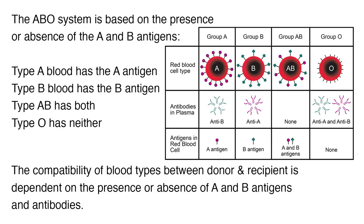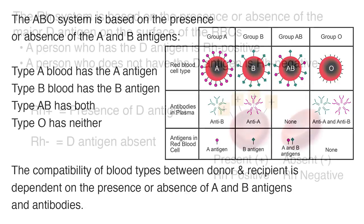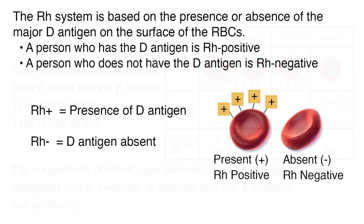The RH system is based on the presence or absence of the major D antigen on the surface of the RBCs. A person who has the D antigen is RH positive. A person who does not have the D antigen is RH negative.